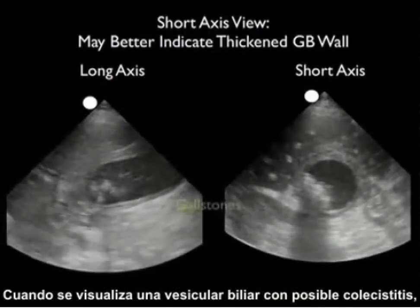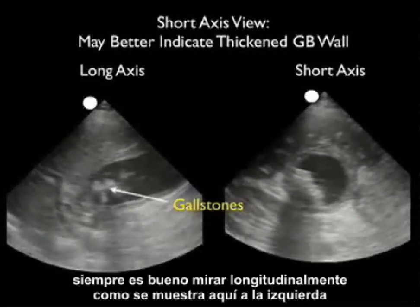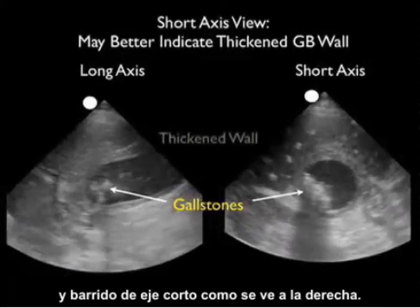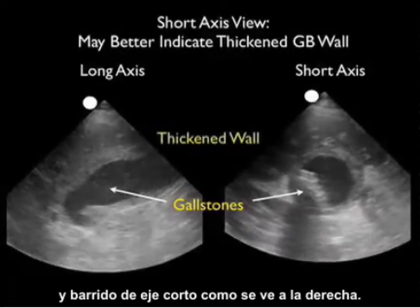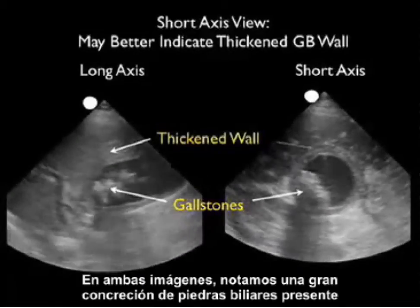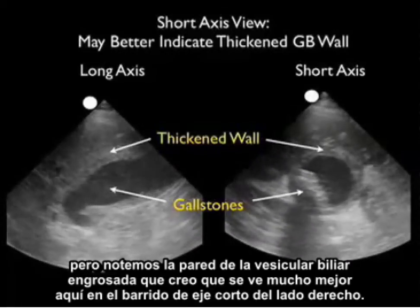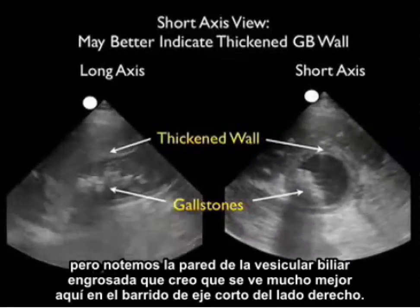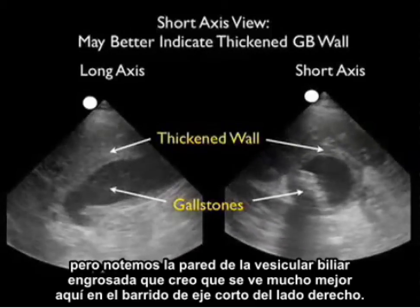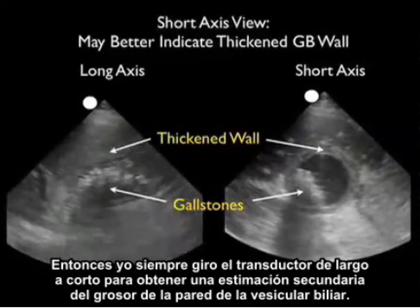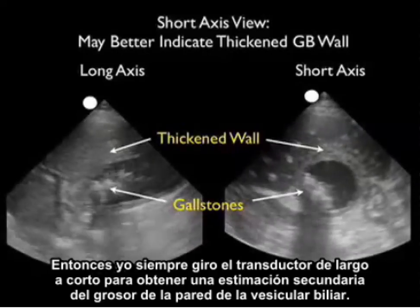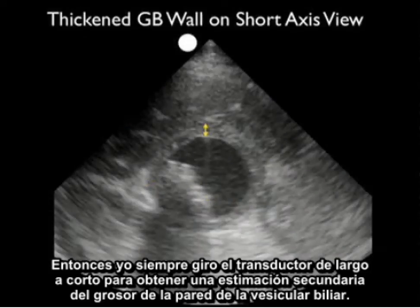When imaging a gallbladder with possible cholecystitis, it's always good to look in a long axis scan, as shown here to the left, and a short axis scan as seen to the right. In both of these images we note a large concretion of gallstones present, but notice the thickened gallbladder wall that is much better seen here on the short axis scan to the right side. So I always swivel the probe from long to short to get a secondary assessment of how thick that gallbladder wall is.